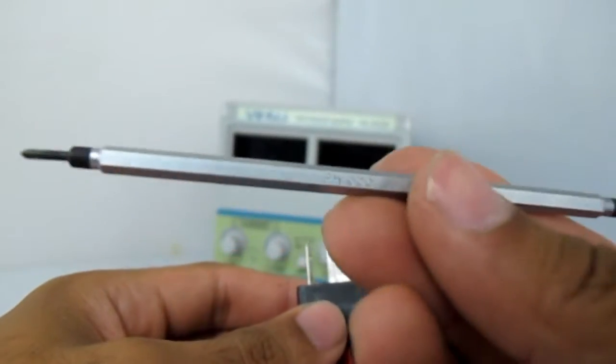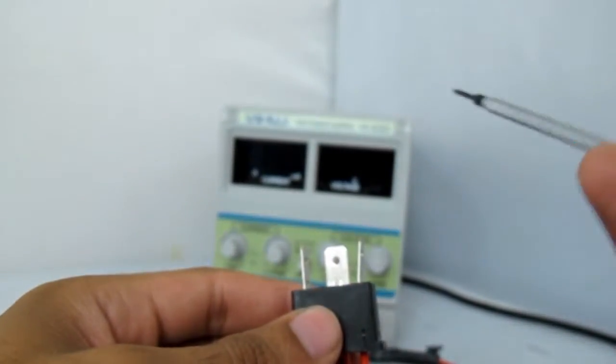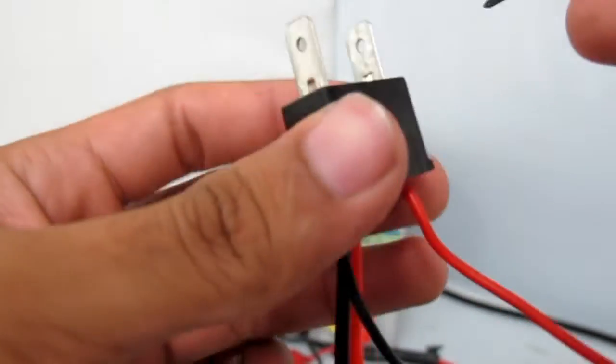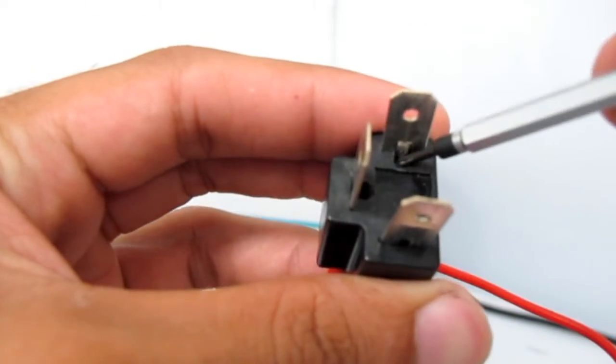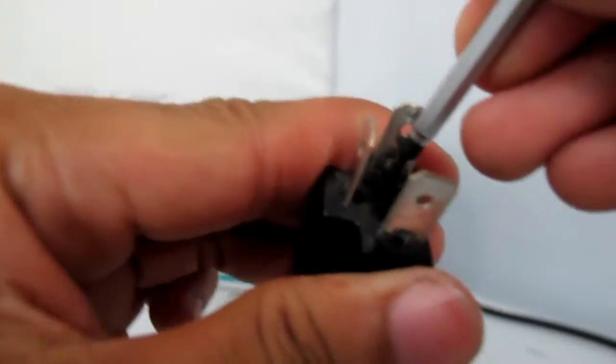To de-pin all you need is a small flat head screwdriver to fit into the slot of the connector. Apply some pressure to flatten the metal prong and pull it out from the back.